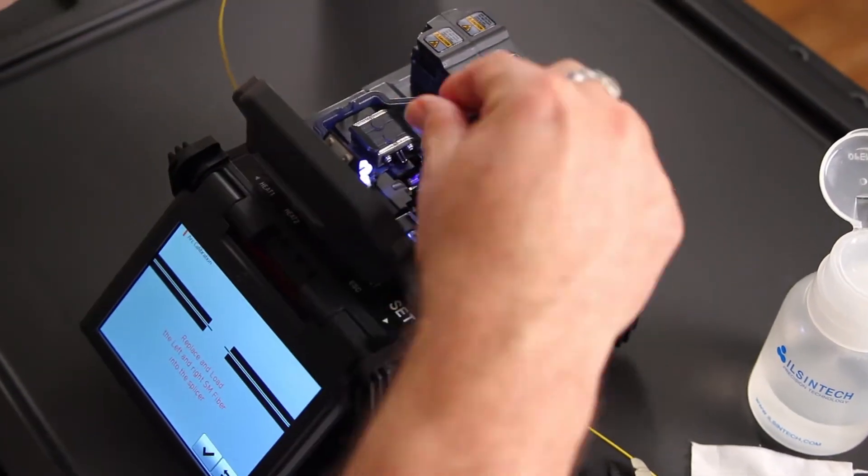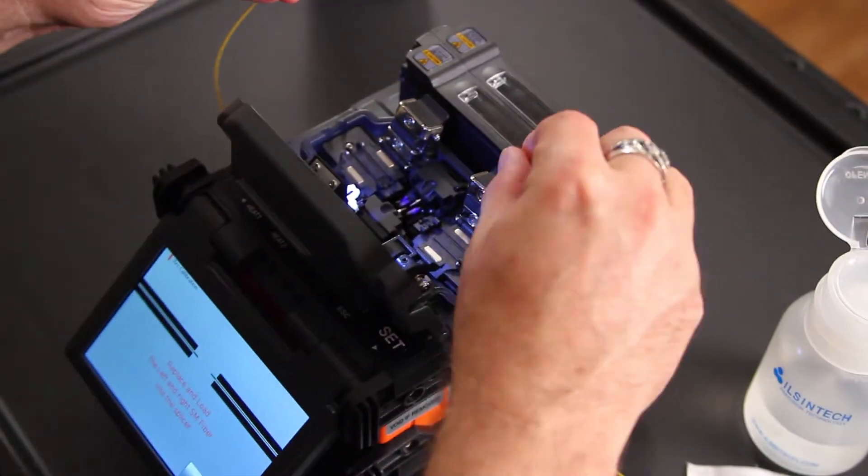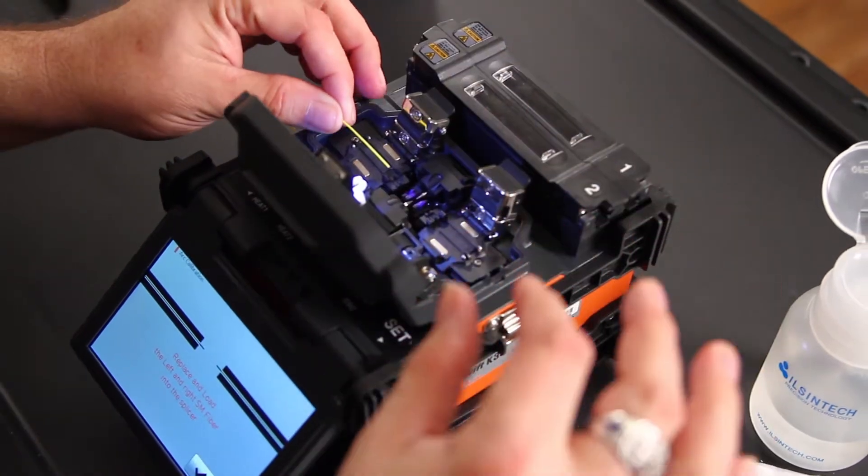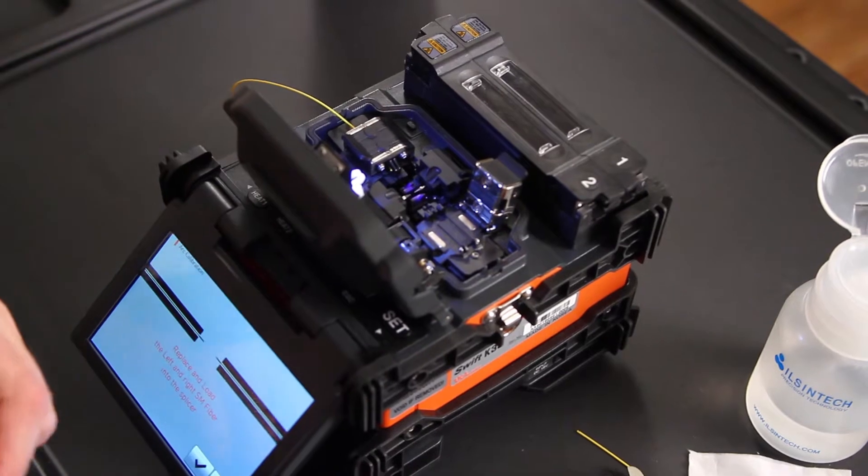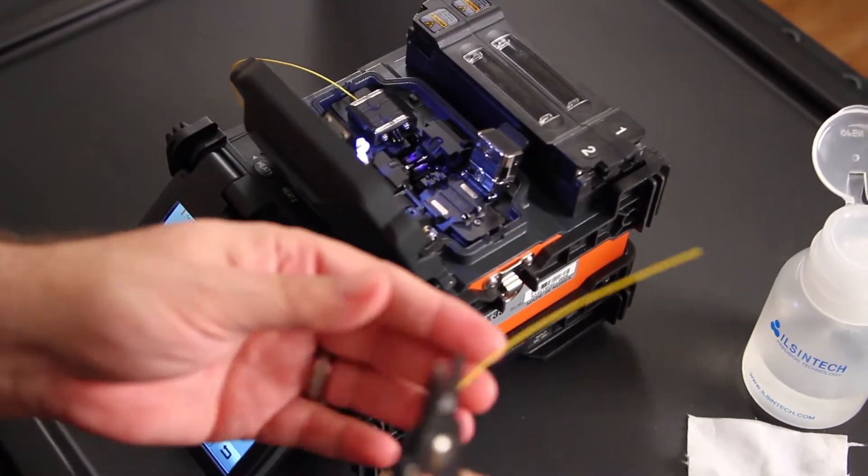Open your wind cover, open your clamps, and place your fiber in your splicer. Close your clamp and prepare your other side.